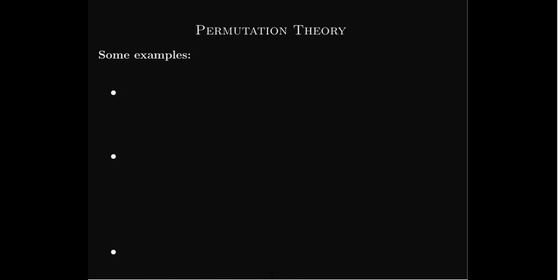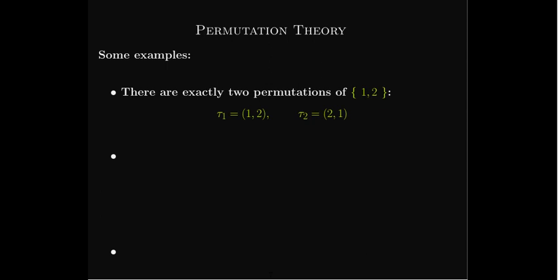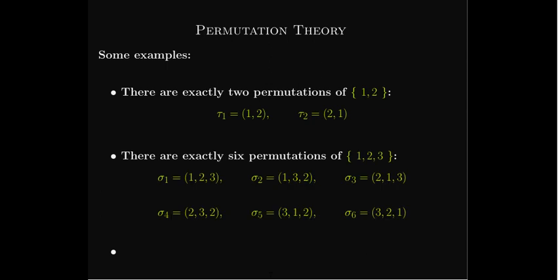Let's look at some examples. If I look at the permutations of the first two counting numbers, there are only two ways you can write it: keep the same order, or swap the 2 and the 1. Those are my two permutations, tau-1 and tau-2. If I have three numbers, I get six permutations. I could keep the same order — 1, 2, 3 — or keep 1 as the first number and swap the remaining order. I could keep 2 as the first number in ascending or swapped order, and choose 3 as the first number in ascending or reversed order.